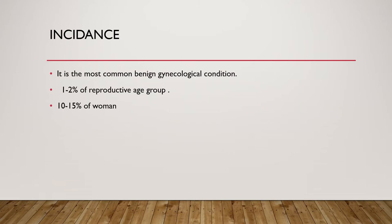What about the incidence of endometriosis? It is actually the most common benign gynecological condition. In the reproductive age group, between 15 and 45 years of age, the incidence is 1–2%, and the overall incidence in women is 10–15%.